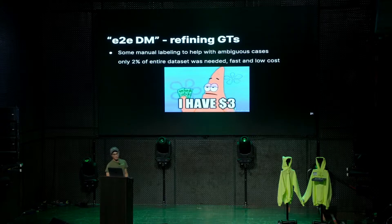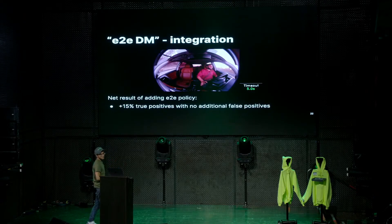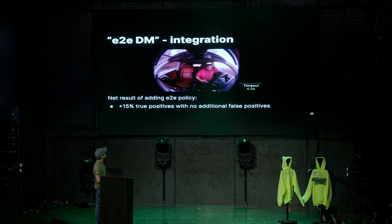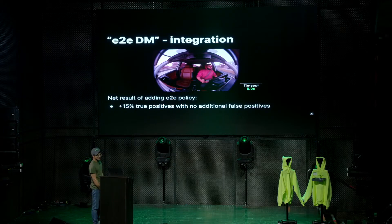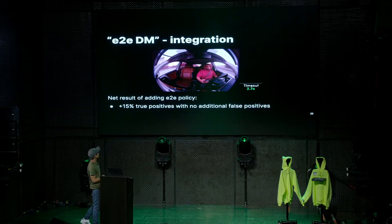With that improved ground truth and the end-to-end DM model trained on it, the model is now able to pick up additional subtle distractions like phone use without false triggering on chill driving poses. The timer dropping indicates the system thinks Adeeb was distracted — and it's fairly accurate. In numbers, the net result of adding the end-to-end policy is a 15% gain in true positives with no false positive gain.